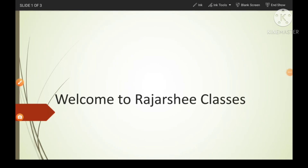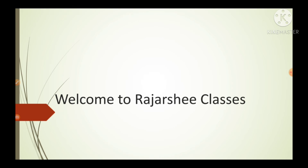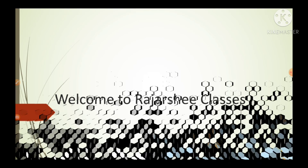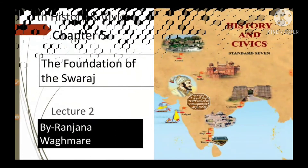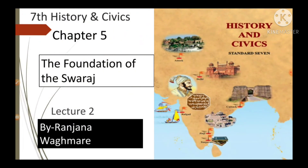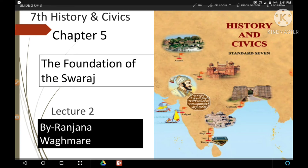Hello students, kaysay ho? Umit karti ho ki aap sab thik hongi. Welcome to our channel Rajarshi Classes. Today in this video, we are going to learn 7th standard history, chapter number 5, The Foundation of the Swaraj. This is the second part of this lesson. If you like this video, then like, share and subscribe it and also click the bell icon, then you will get the latest notification of our video. Let's start the second part.